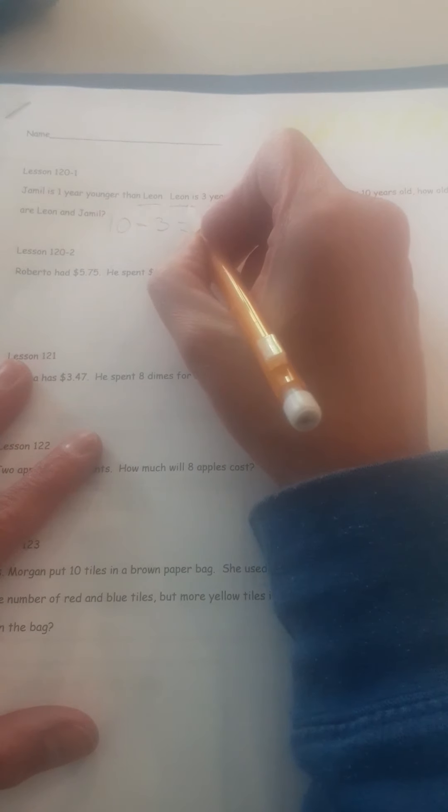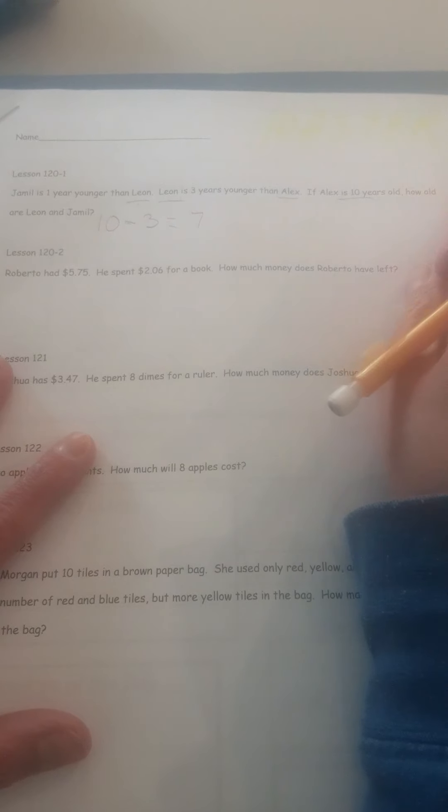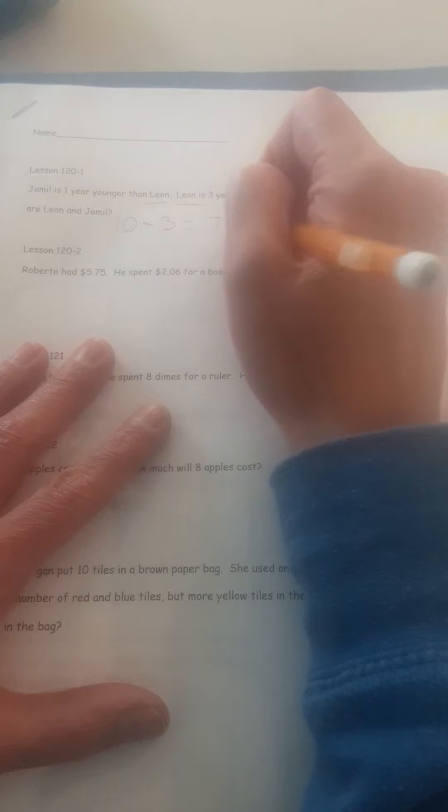So now we know how old Leon is. Now we need to figure out how old Jamil is. So we have seven for Leon. Now we would have to go seven minus one because he's one year younger, which is six. And six would be Jamil.